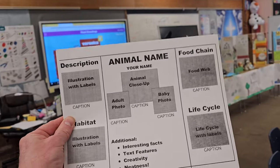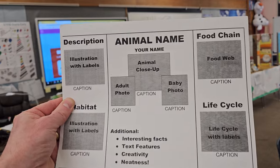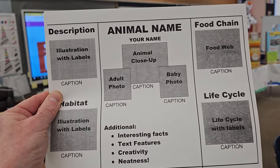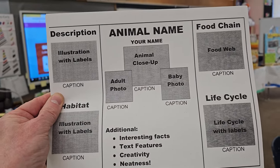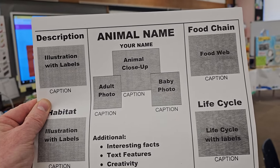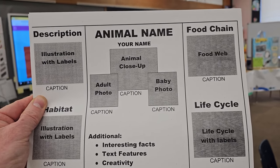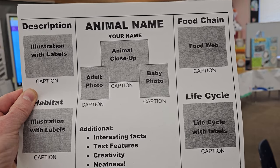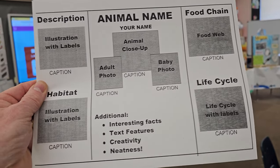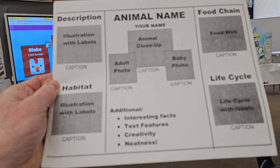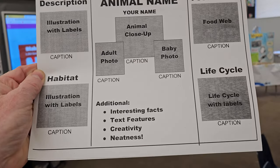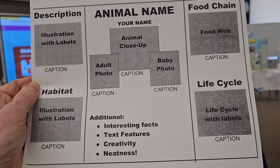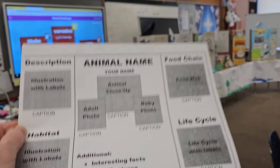Right here is the template for the animal report. You'll see up on the top there I have the description, so they're gonna have an illustration with labels. Then you have the animal name, animal close-up, adult photo, baby photo, a food chain, life cycle, habitats with another illustration, and then three facts down below. And then if they want to add something else, they can do that.